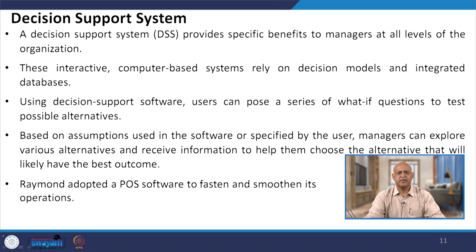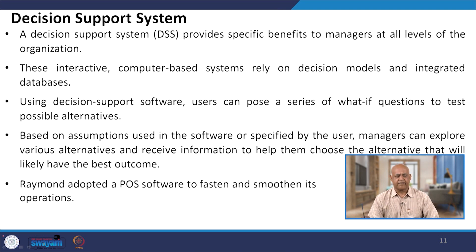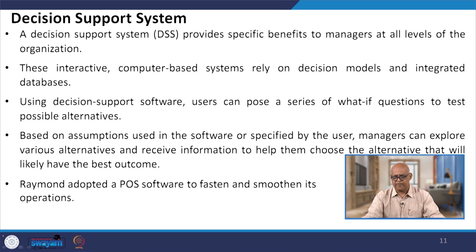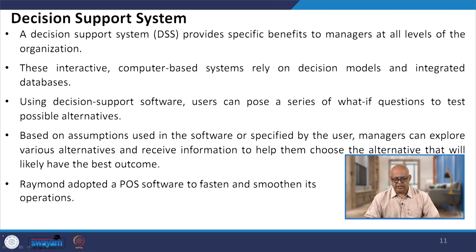A decision support system provides specific benefits to managers at all levels of the organization. These interactive computer-based systems rely on decision models and integrated databases. Using decision support software, users can pose a series of 'what-if' questions to test possible alternatives. Based on assumptions specified by the user, managers can explore various alternatives and receive information to help them choose the alternative most likely to have the best outcome.